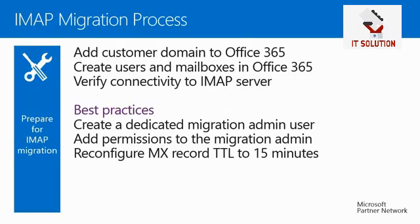Before you start migrating mailboxes, it is recommended to change the DNS time-to-live settings on your current MX record — change it to an interval such as 900 seconds, being 15 minutes. When you change the MX records to point to your Office 365 email organization after all mailboxes are migrated, the update should propagate more quickly because of the shortened time-to-live interval.